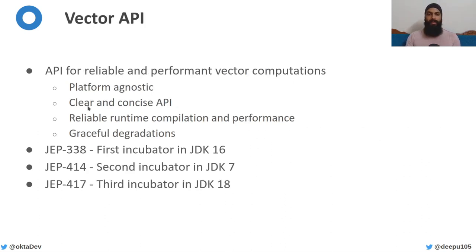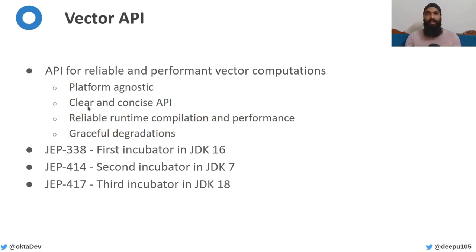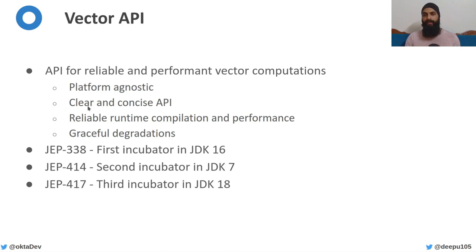There is another lesser-known part of the Panama project, which is the Vector API. It's not talked about much but it's quite important — it's an API for reliable and performant vector computations. It is platform-agnostic and has a clear and concise API, reliable runtime compilation performance, and graceful degradation. This was first incubated in JDK 16, with a second incubator in JDK 17, and a third incubator in JDK 18.